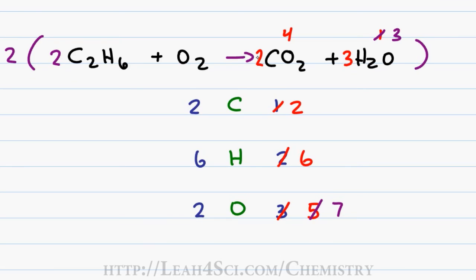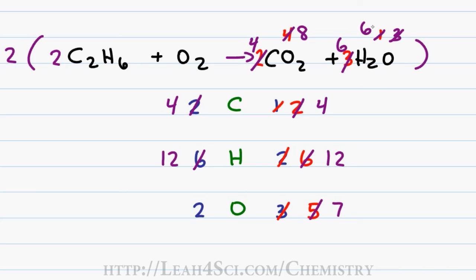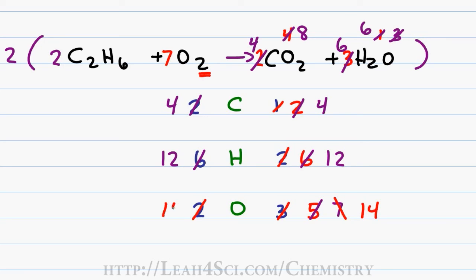Placing a 2 in front of ethane, the 2 in front of CO2 becomes a 4, and the 3 in front of water becomes a 6. Updating atoms: 2×C2=4 carbons on the left; 2×H6=12 hydrogens; on the product side, 4×1=4 carbons and 4×2=8 oxygens from CO2; 6×2=12 hydrogens and 6×1=6 oxygens from water, for a total of 14 oxygens on the right. Since oxygen appears only as O2 on the reactant side, take 14 divided by 2 and place a 7 in front. This gives 7×2=14 oxygens. Final balanced equation: 2 C2H6 + 7 O2 → 4 CO2 + 6 H2O — with 4 carbons, 12 hydrogens, and 14 oxygens on both sides.